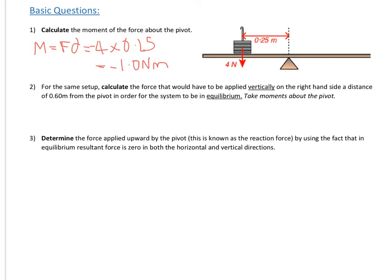Because it's going round anticlockwise and typically we say that is negative, and also this force is acting downwards, which again we typically say is negative. So we need the force that we applied vertically on the right hand side, a distance of 0.6, in order for it to be in equilibrium. When it's in equilibrium, the sum of the moments is zero. Essentially we've got a force here and you apply it down to make it go in the opposite direction.